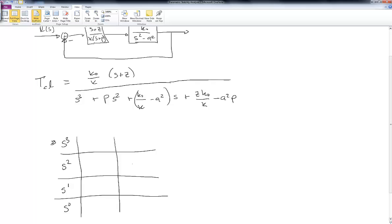And the only thing hard about this problem is that I've got a lot of parameters floating around that are not constant numbers. They're just variables. But otherwise, it's fairly straightforward. I have 1, K-naught over K minus A squared, and then there's going to be zeros out here. And then I have P and Z times K-naught over K minus A squared times P, and then zeros out here.